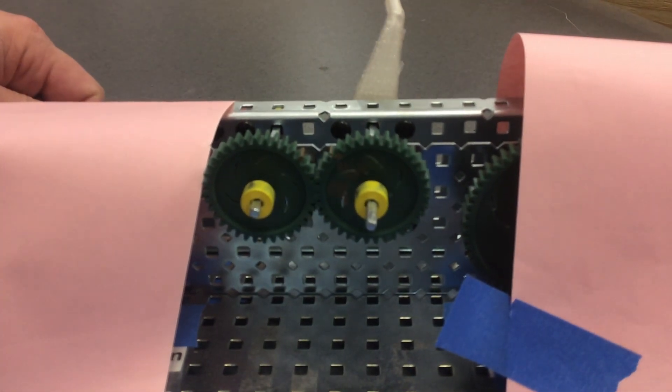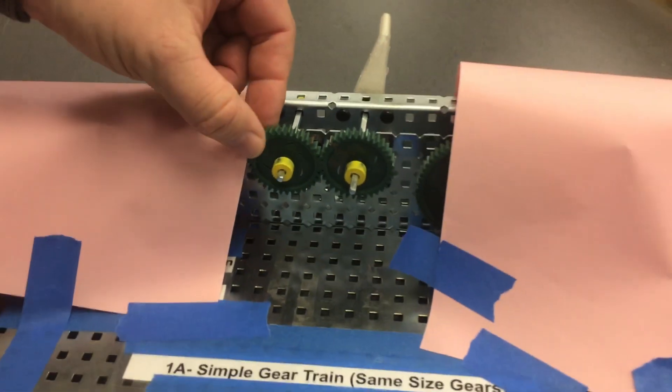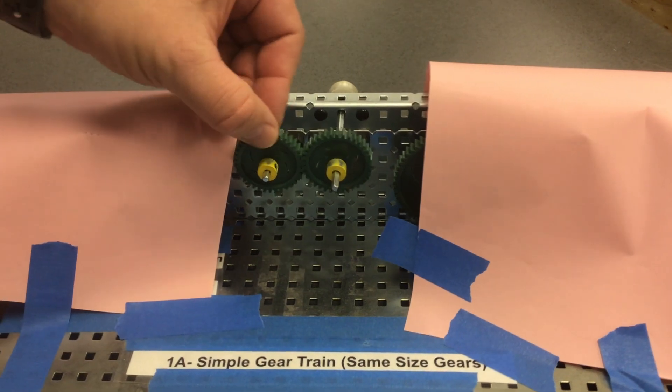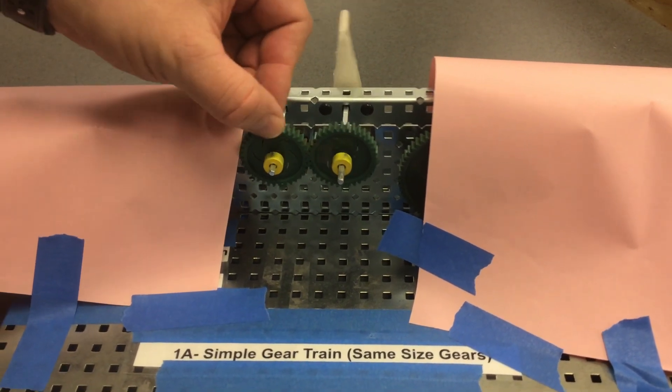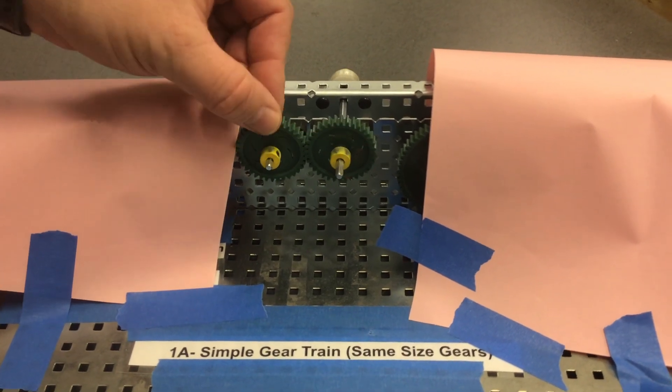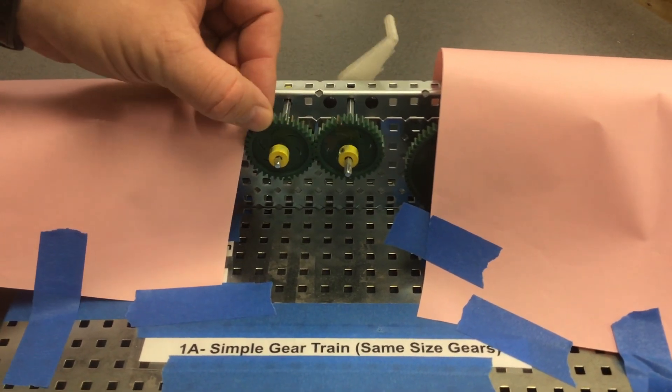The flow of power, which means moving the input will move the output. The flow of power on this is reversible because if I move the output, it will move the input.